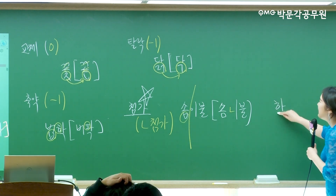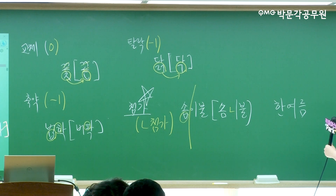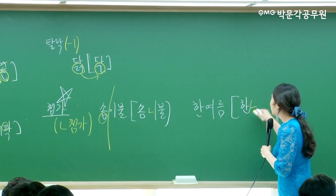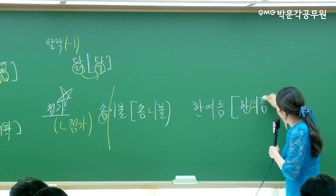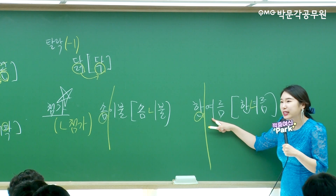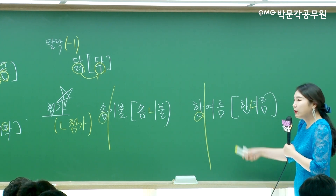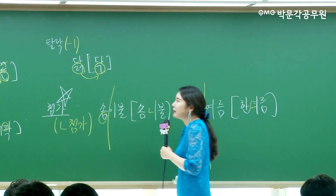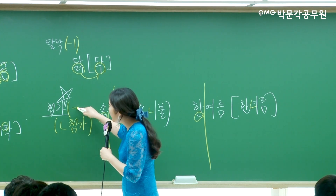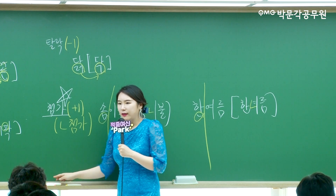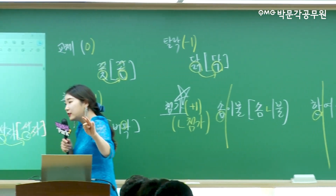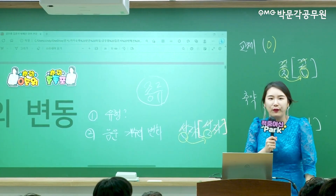'한여름'을 발음하면 [한녀름]이라고 하죠. 앞에 있는 말이 자음으로 끝나고 뒤에 있는 말이 이·야·여·요·유로 시작되는 경우 니은 첨가가 일어납니다. 첨가는 음운의 개수가 플러스 1이에요. 음운론은 첫 번째로 어떤 유형에 속하니, 두 번째로 음운의 개수의 변화가 뭐니, 이 두 가지를 물어보는 게 다예요.